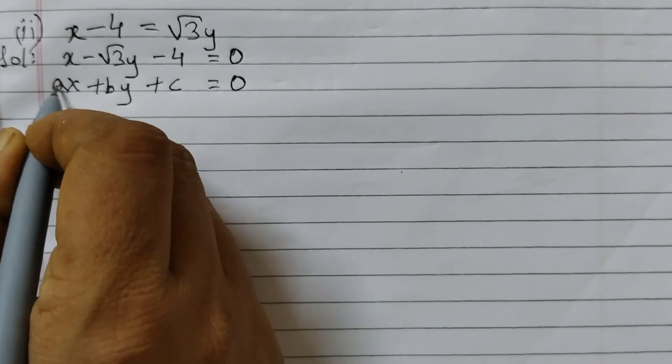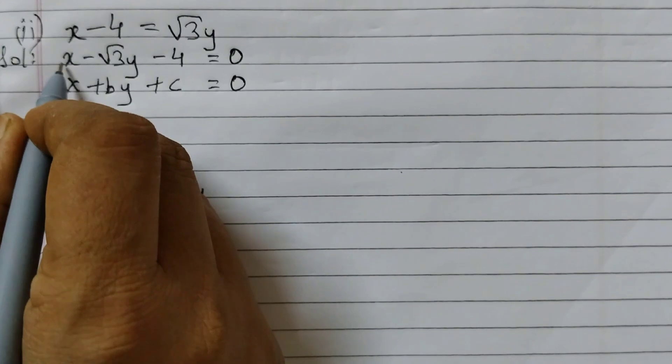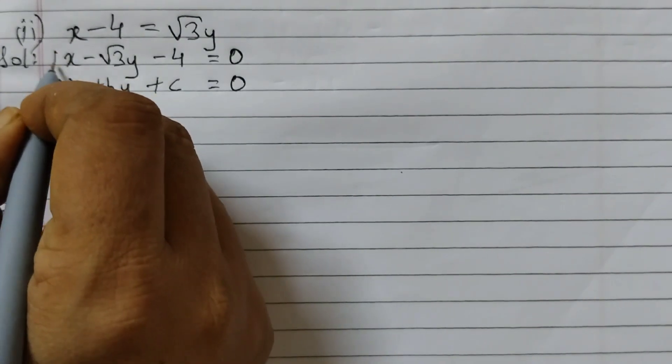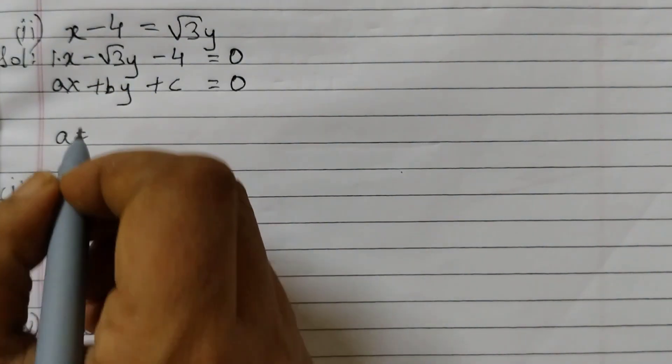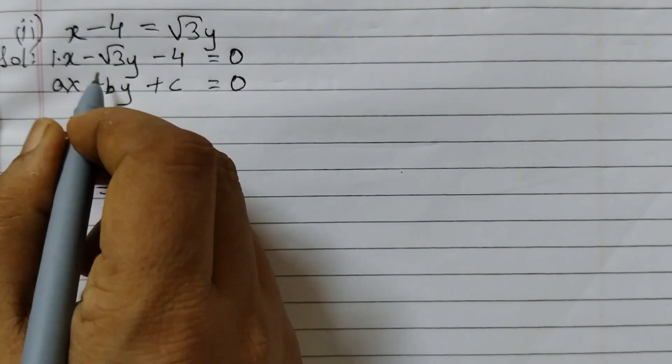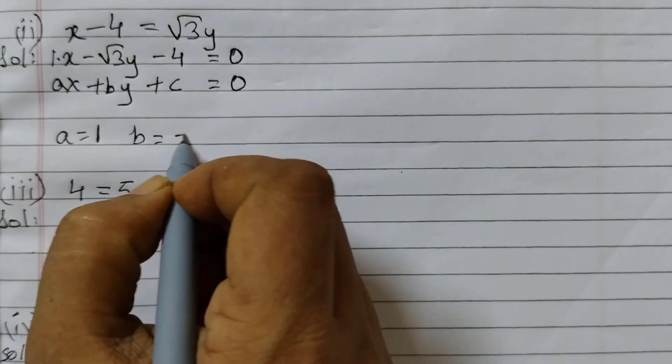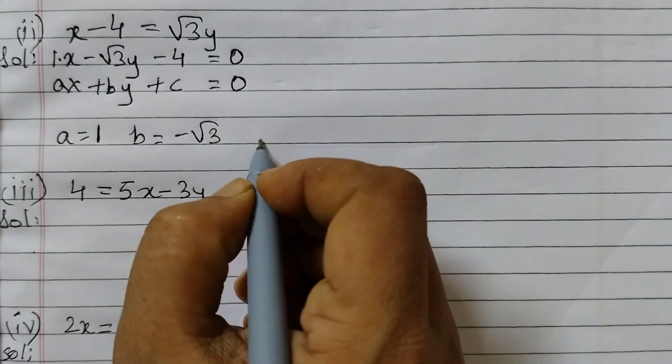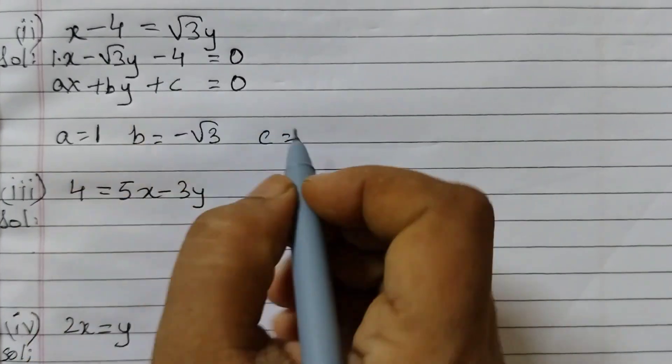So a is, nothing is here with x, that means that's 1. We can write this as 1 into x, that is x. So a is 1, b is minus square root of 3 and c is minus 4.